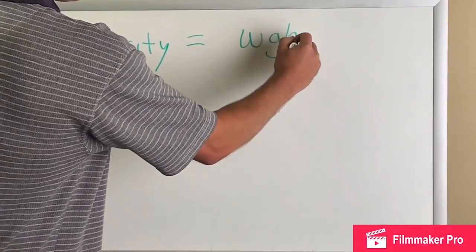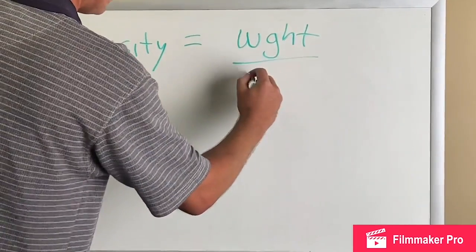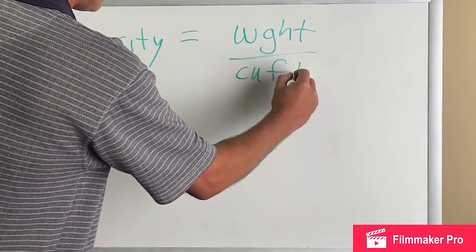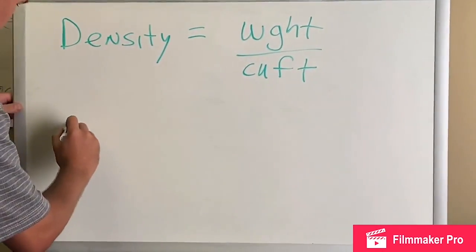So density equals the weight divided by cubic feet. So let me show you how to calculate cubic feet.